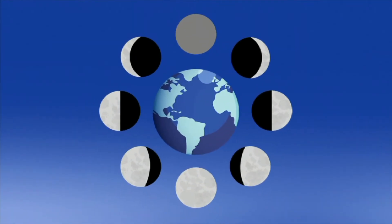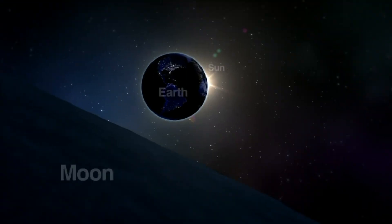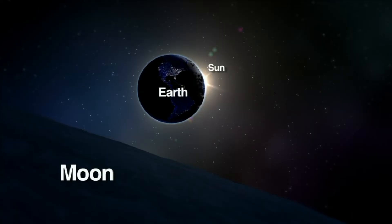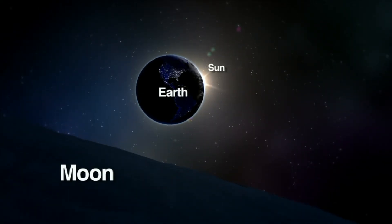The next phase is called full Moon. This happens when the Earth is between the Sun and the Moon. We can see the whole Moon.